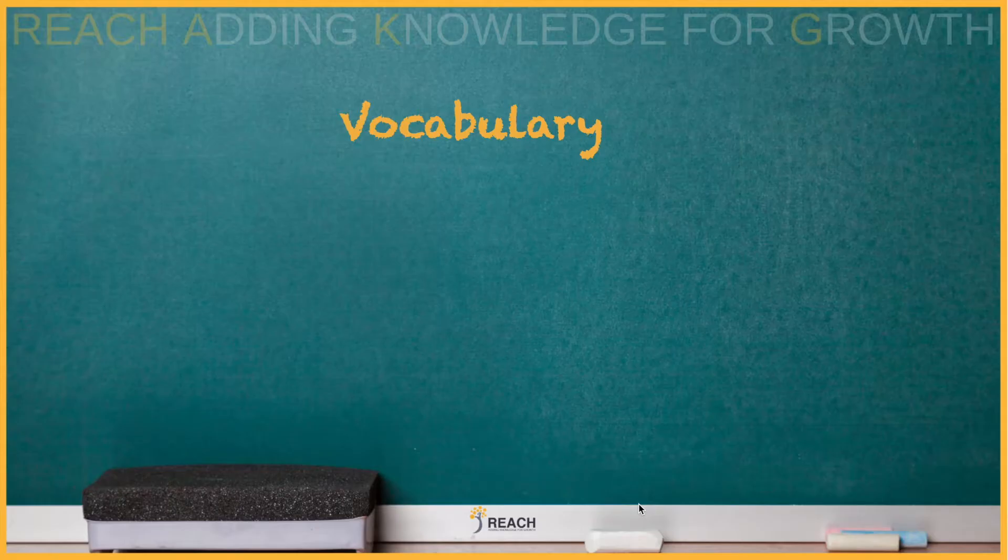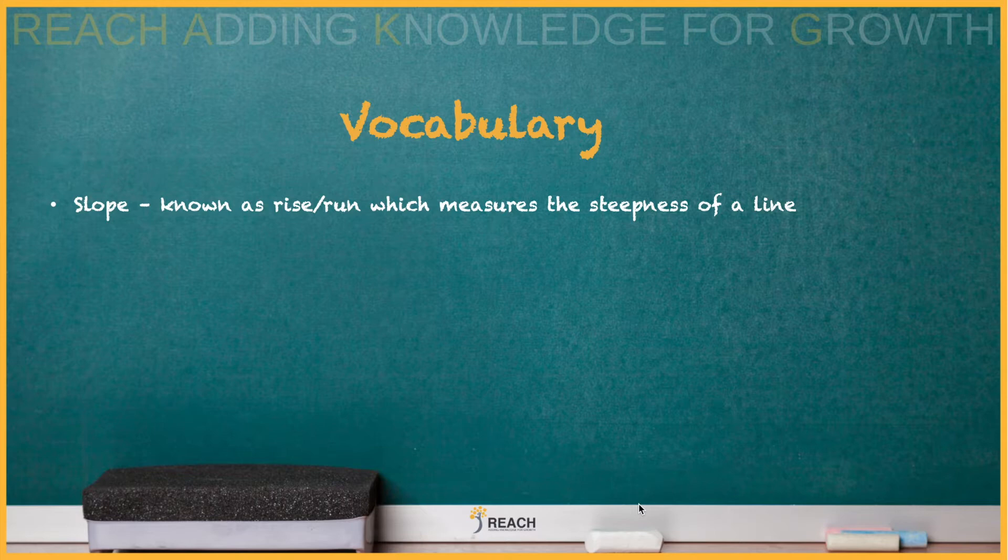Let's check out some vocabulary. Slope, known as rise over run, which measures the steepness of a line. You remember riding a bike, you want to ride the bike down the steepest hills so you can get a fast pace on the bike.